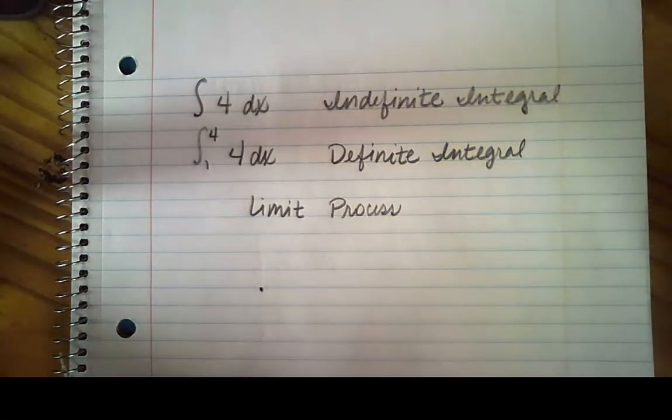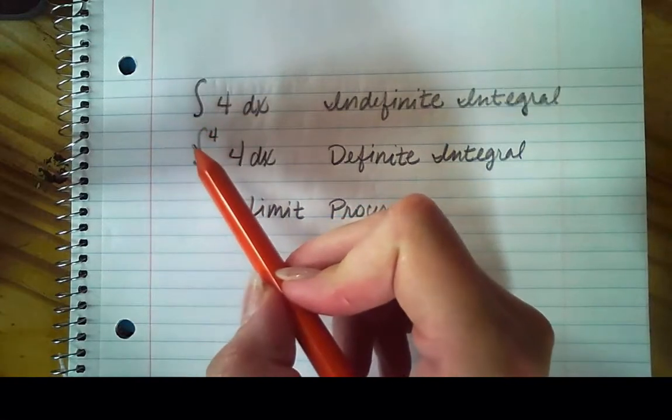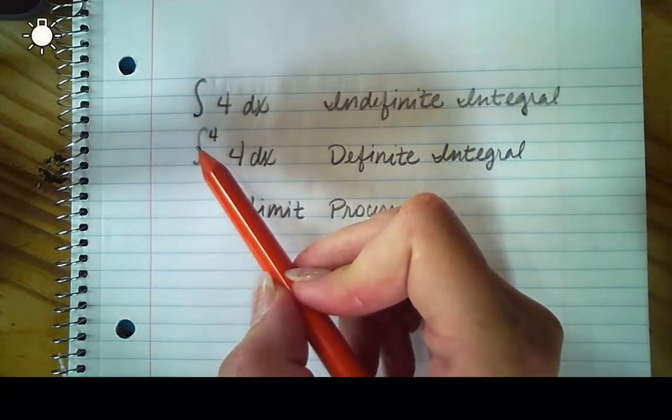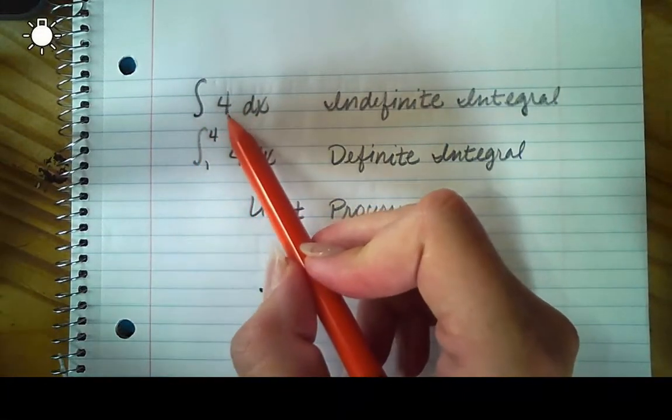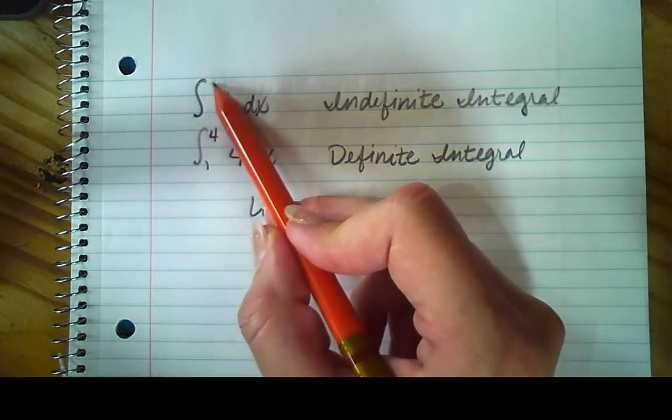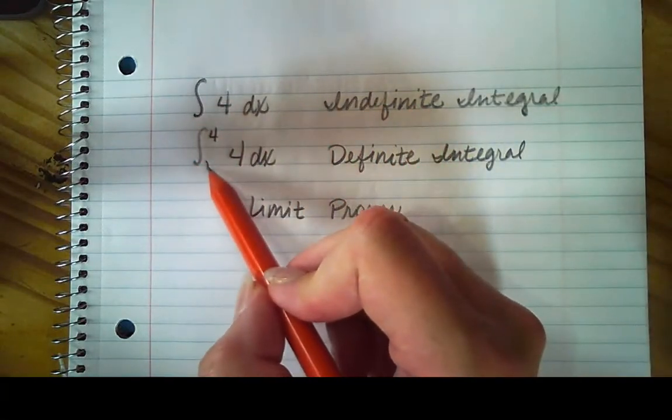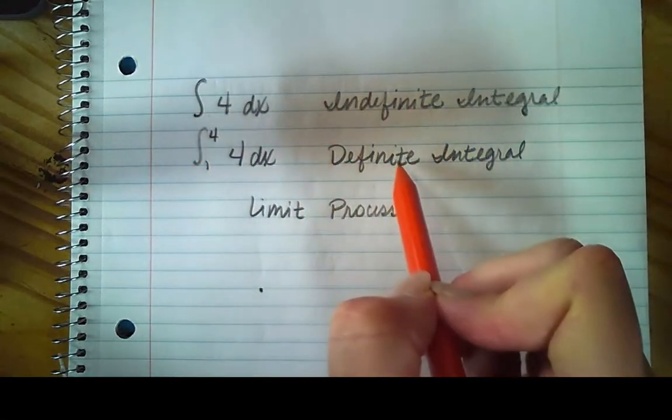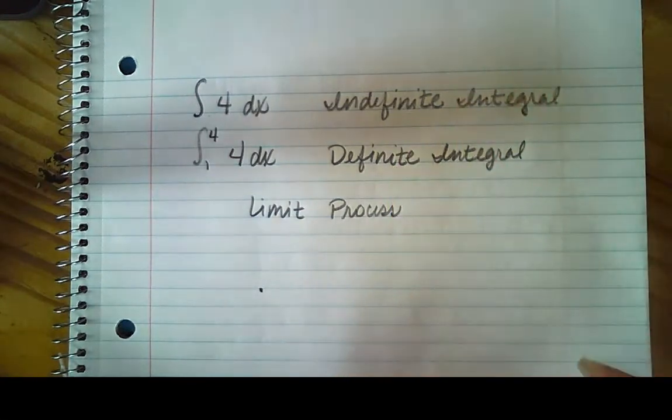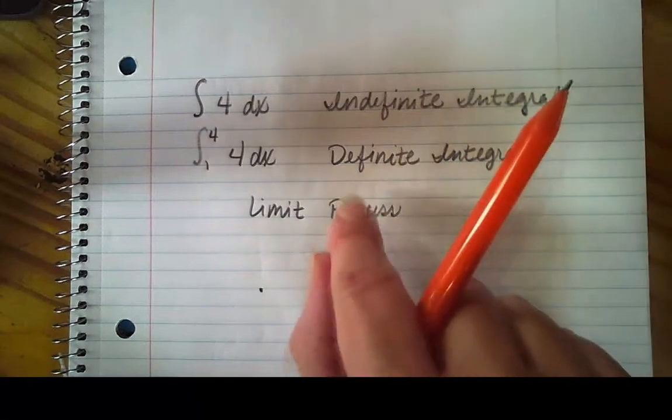All right, so what we've done so far in section 4.1 and a little bit in 4.2 is we've been doing the indefinite integral. So the indefinite integral is going to not have little numbers right here. Well, now we're going to introduce these numbers. We call it a definite integral because the area that we're trying to find is now defined.